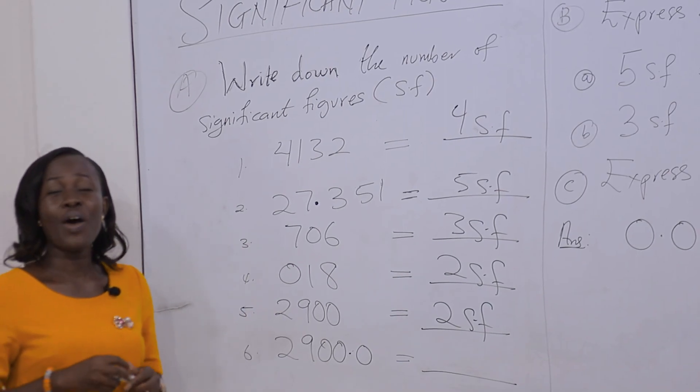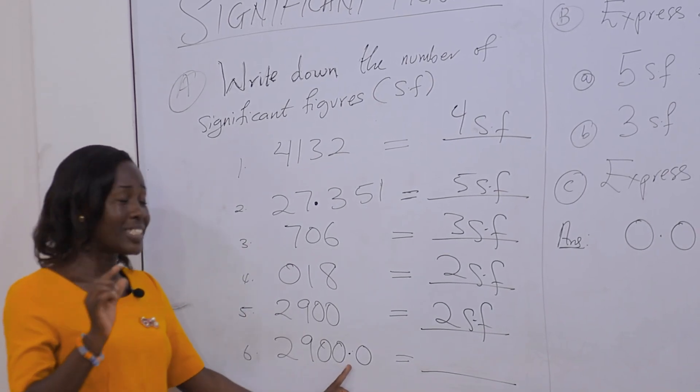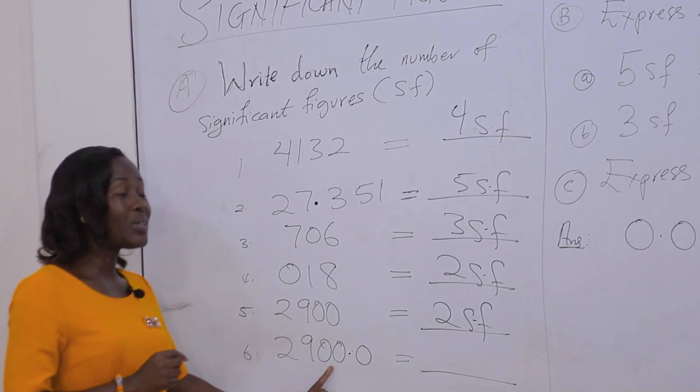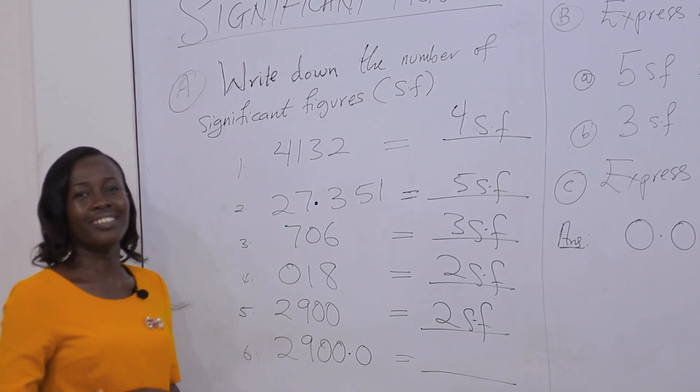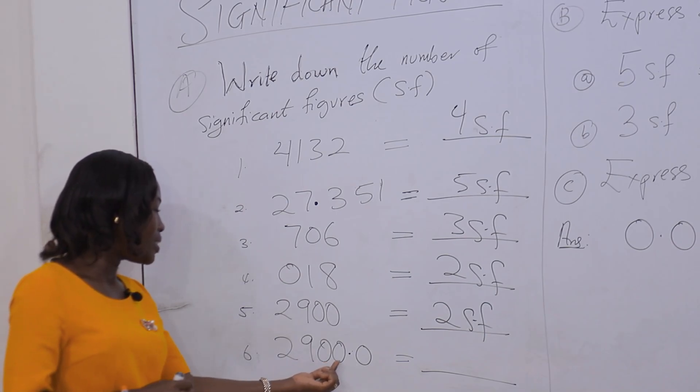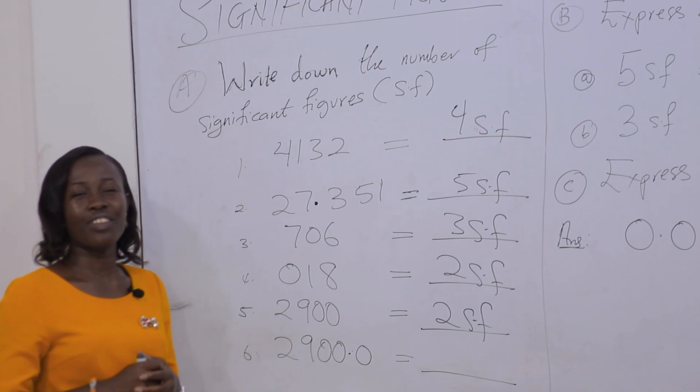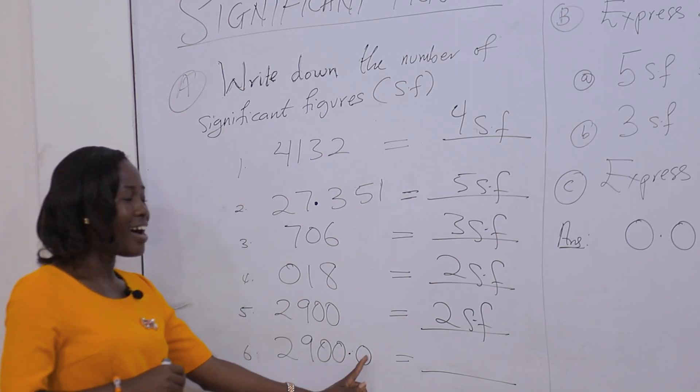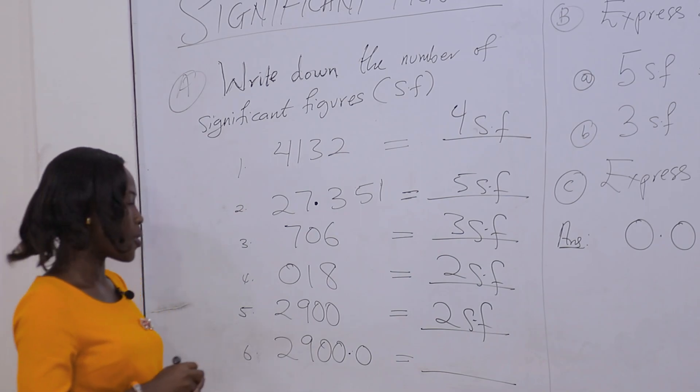However, if there is a decimal point at the end of the trailing zeros, the zeros are now considered significant. So for example 6, 29000.0 has 5 significant figures: 2, 9, 0, 0, 0, and then the last 0 after a decimal point.